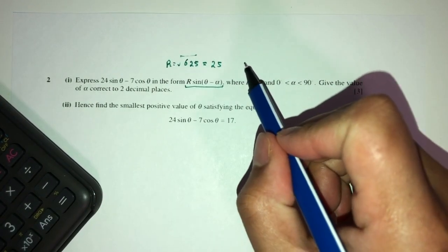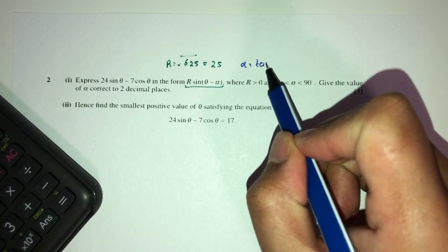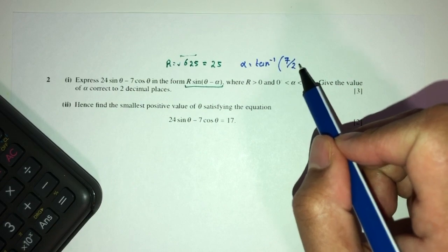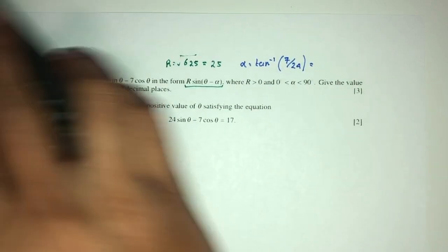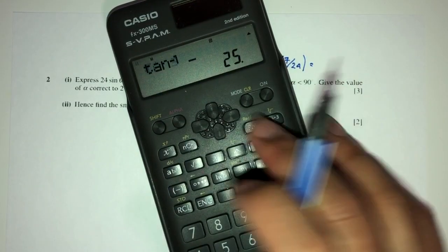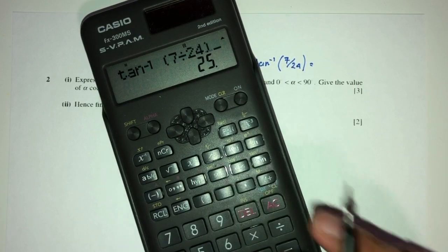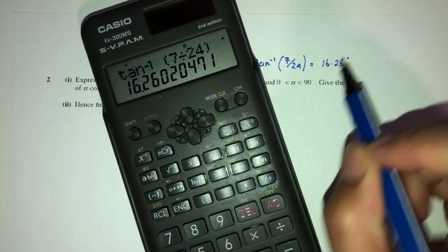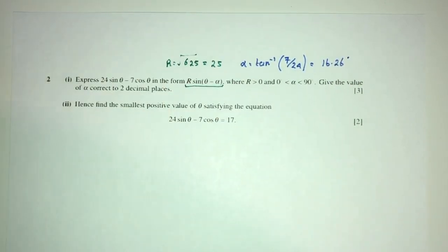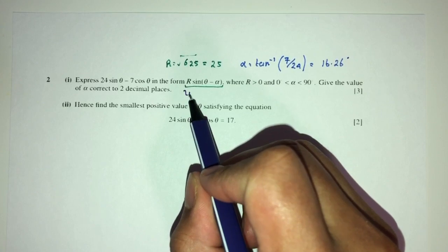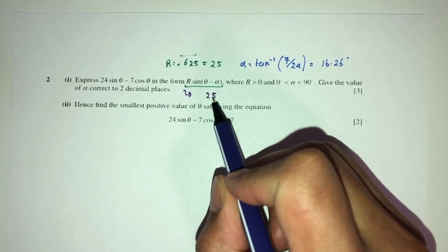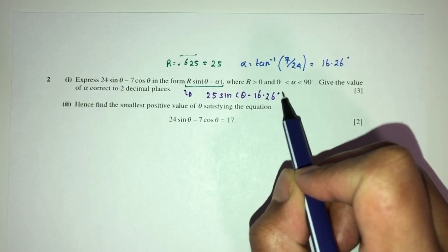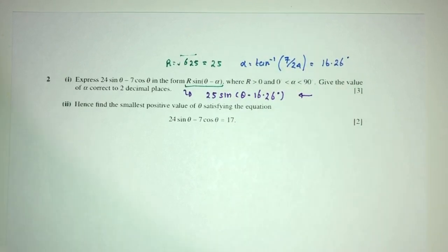Similarly, the value of alpha. That'll be tan inverse of the value over here, which is 7 over 24. It's just a formula we have to know for these questions. Tan inverse of 7 divided by 24. That'll be 16.26 to 2 decimal places. So we will have to write this as 25 sin(θ - 16.26). This is your answer for part 1 of your question.